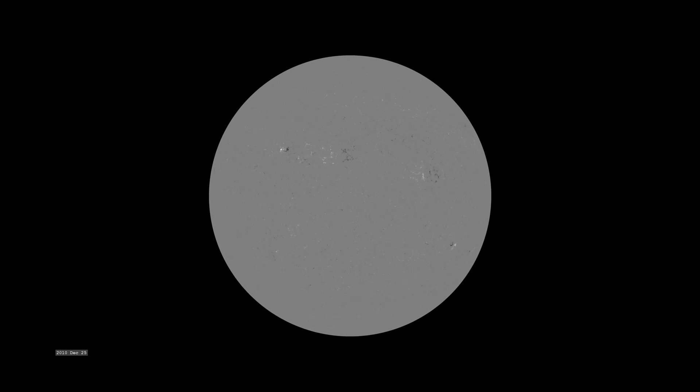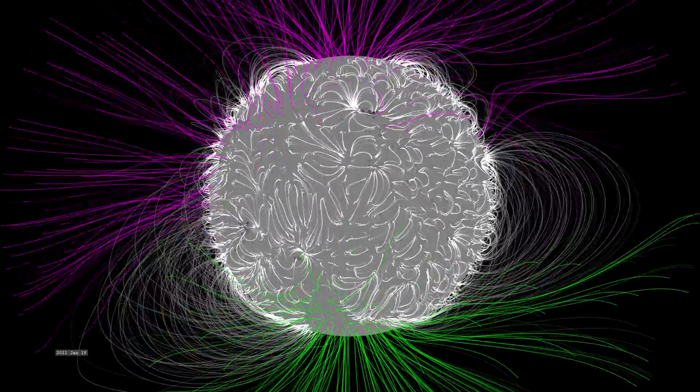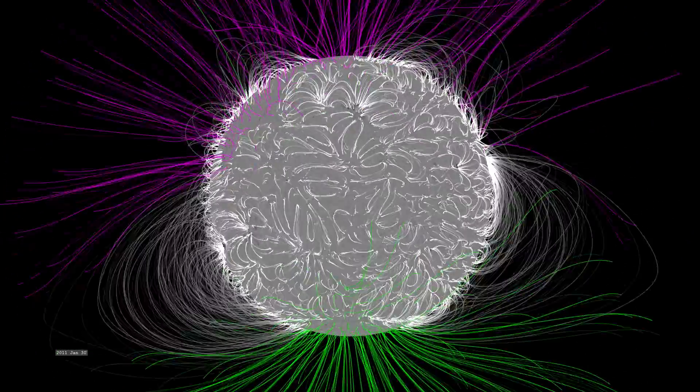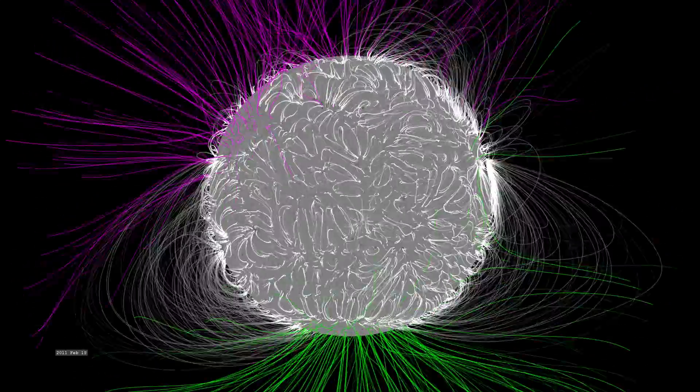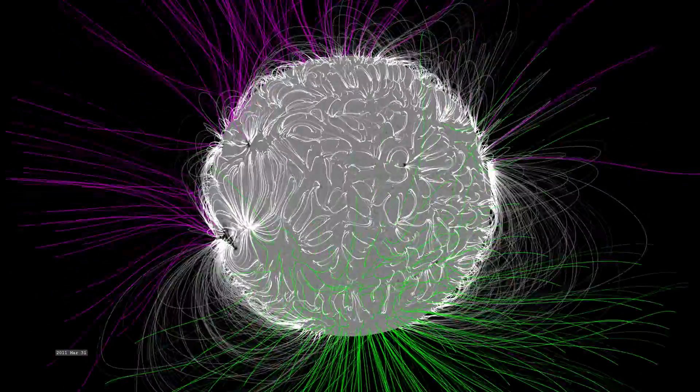Coronal loops form between regions of intense opposite magnetic fields. From these magnetograms, we can create models of the solar magnetic field above the surface of the Sun. This particular model is called the Potential Field Source Surface Model, or PFSS.